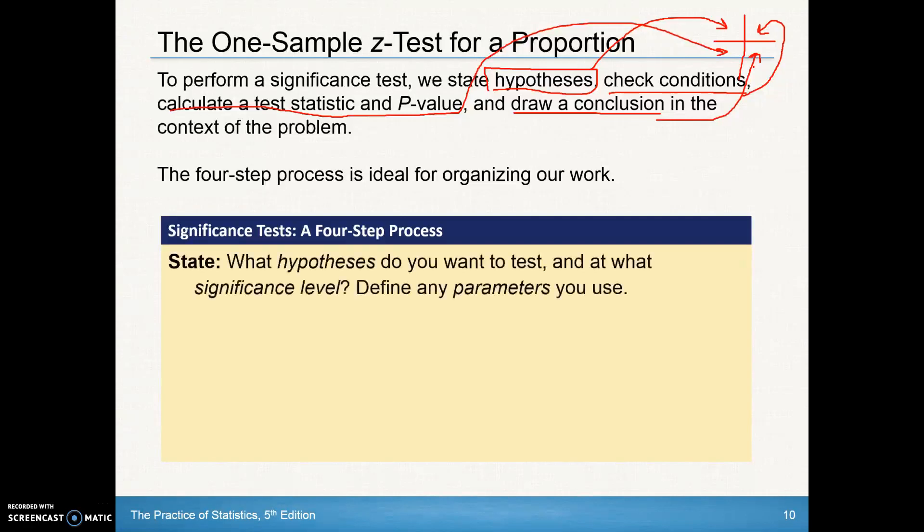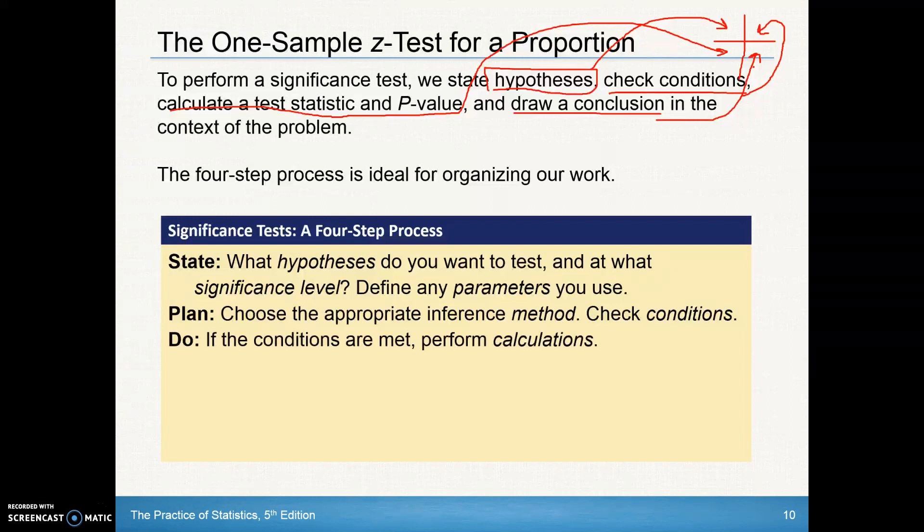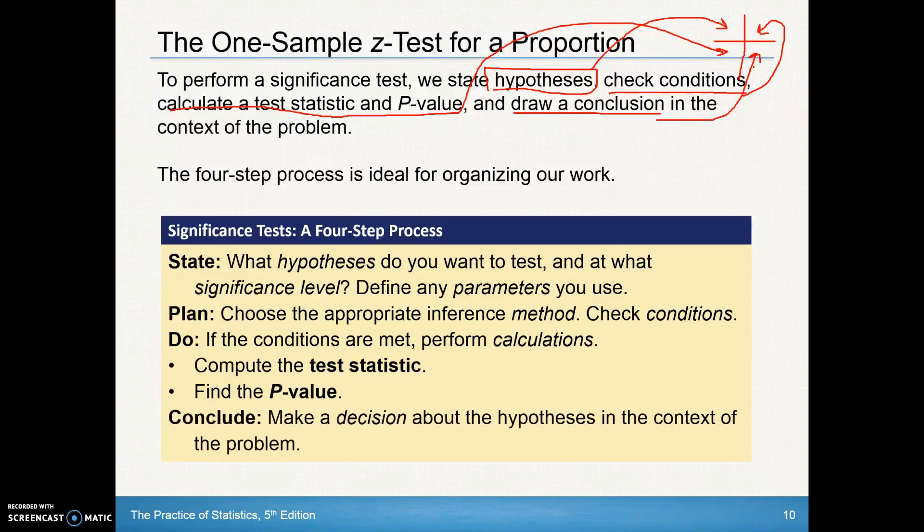Again, outlaying that four-step process, you state in the first box what hypothesis do you want to test and at what significance level and define any parameters you use. Plan, choose the appropriate inference method and check conditions. Do it. If the conditions are met, perform the calculations. So let's compute the test statistic using that z-score. Find the p-value and then the last box make your decision about the hypothesis in context of the problem.